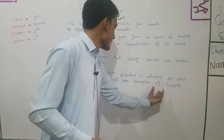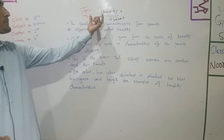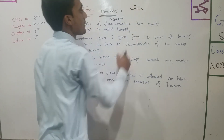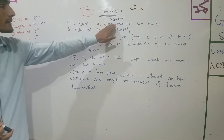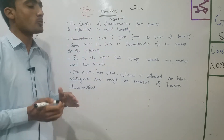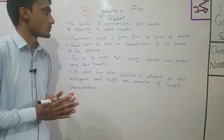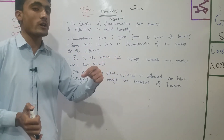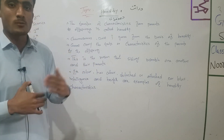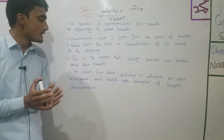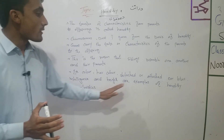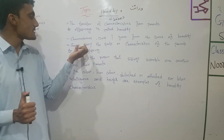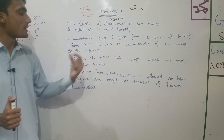Heredity means virasat — the characters come from the parents to the offspring. These characters are passed through genes. Genes express all characteristics such as eye color, intelligence, height, and detached or attached earlobes. Genes transfer all these characters from the parent to the offspring.